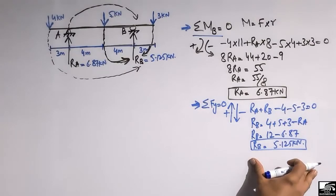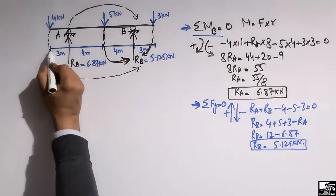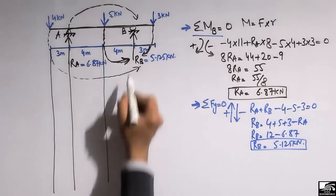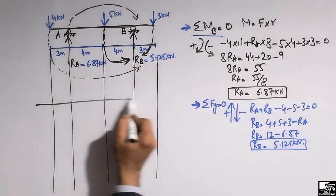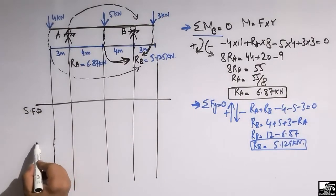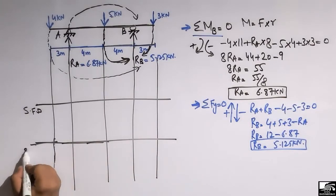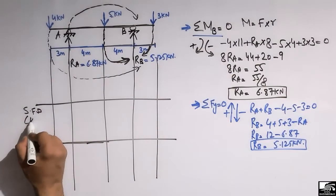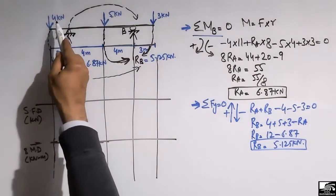Now we can draw the reference lines for the shear force and bending moment diagrams. One reference line is for the shear force diagram and another is for the bending moment diagram. Shear force is in units of kilonewtons, while bending moment is in units of kilonewton-meters. To start with the shear force diagram, the 4 kN force acts downward, so it is plotted in the negative direction: −4.